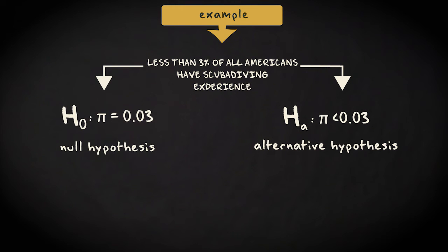Your null hypothesis is the opposite, but it has to be expressed as a single value. That means that H0 is, pi is equal to 0.03.